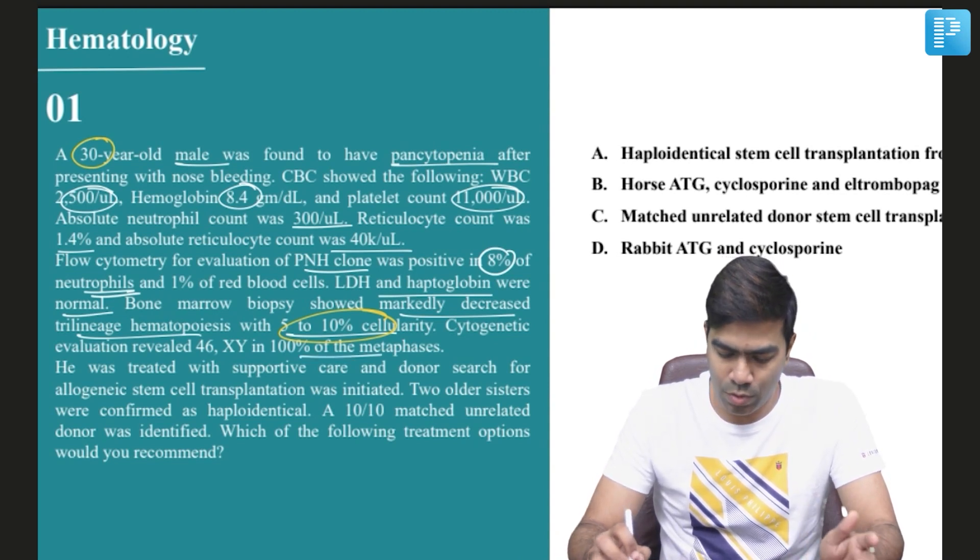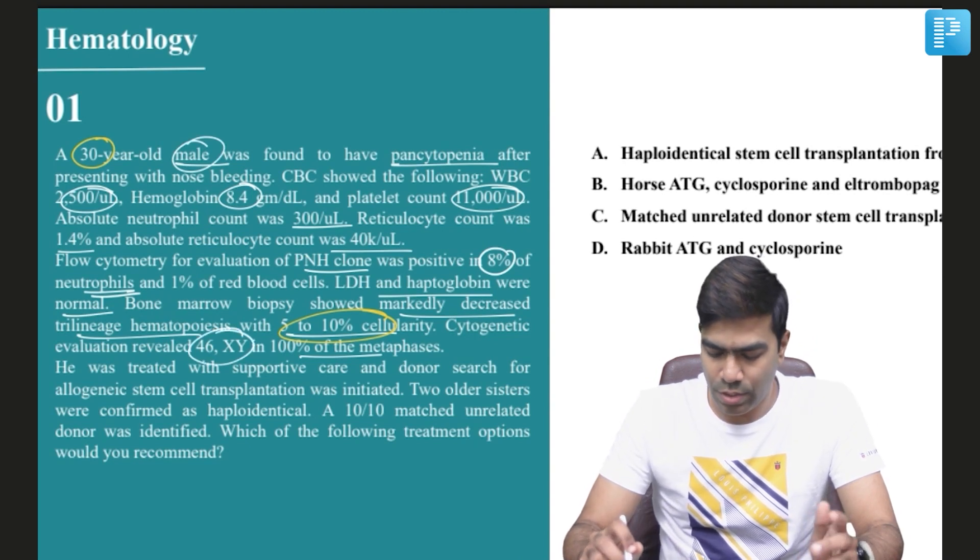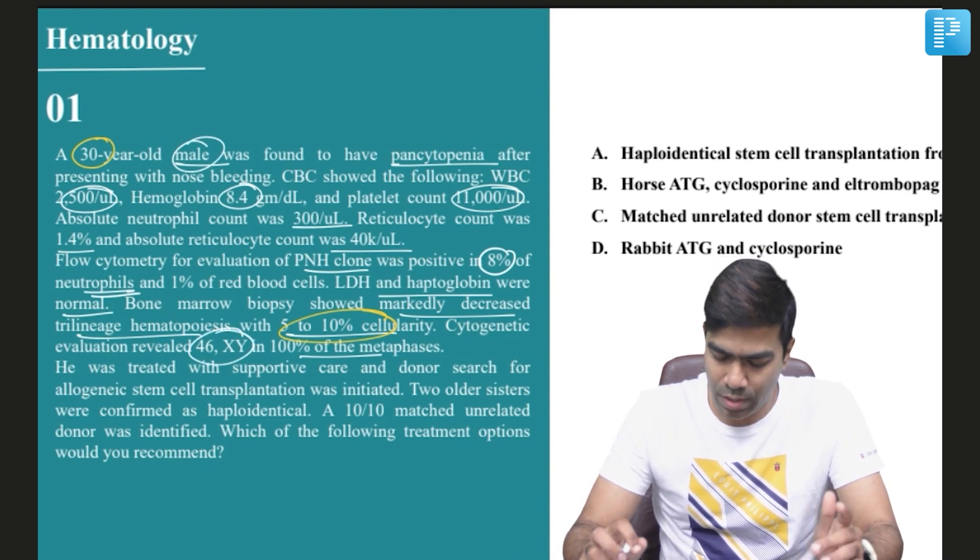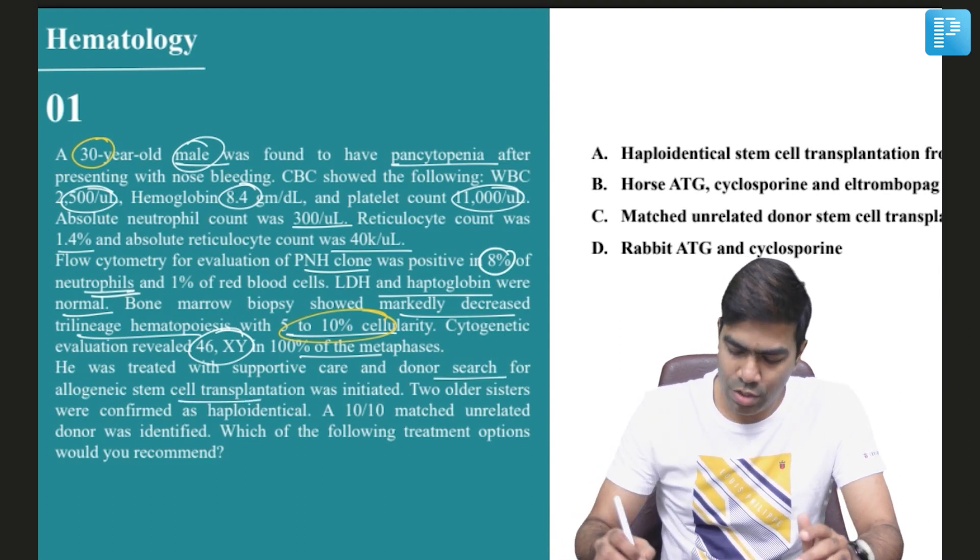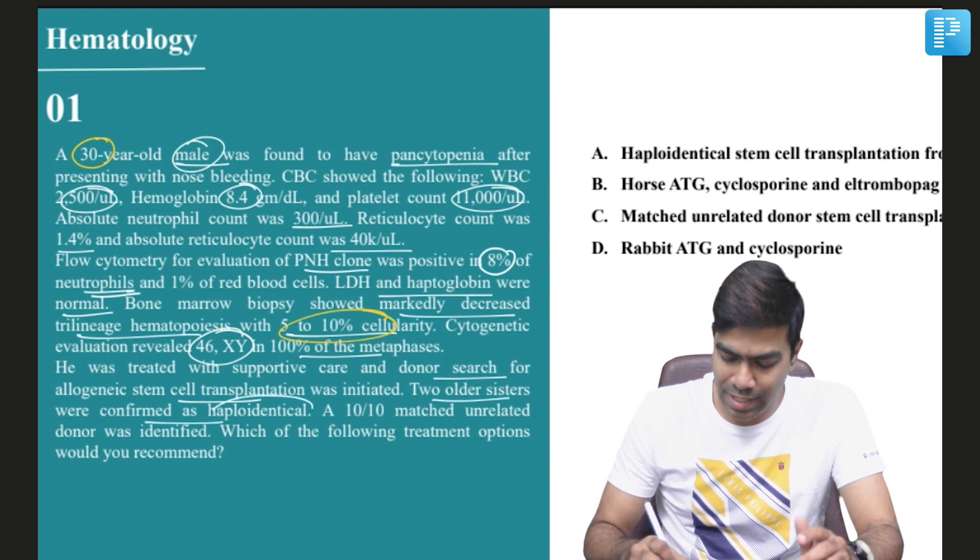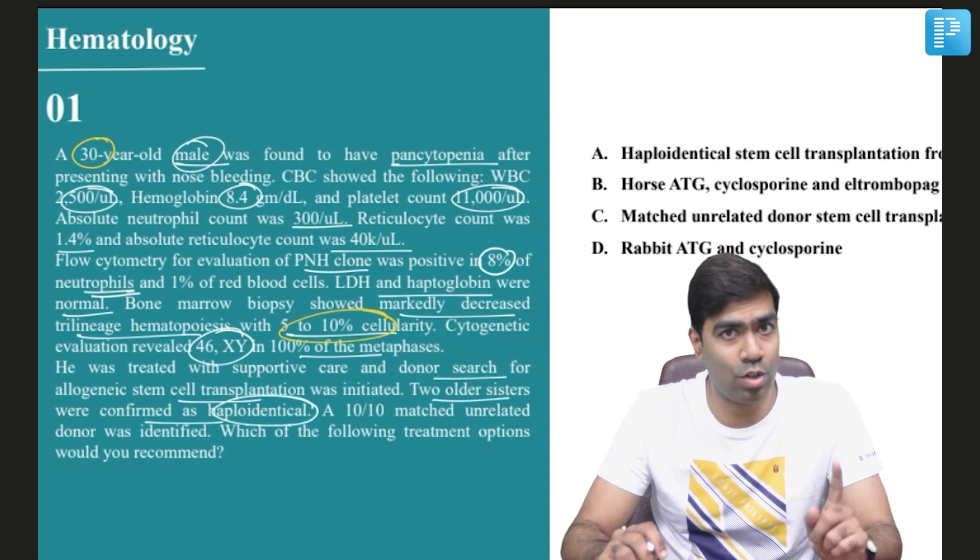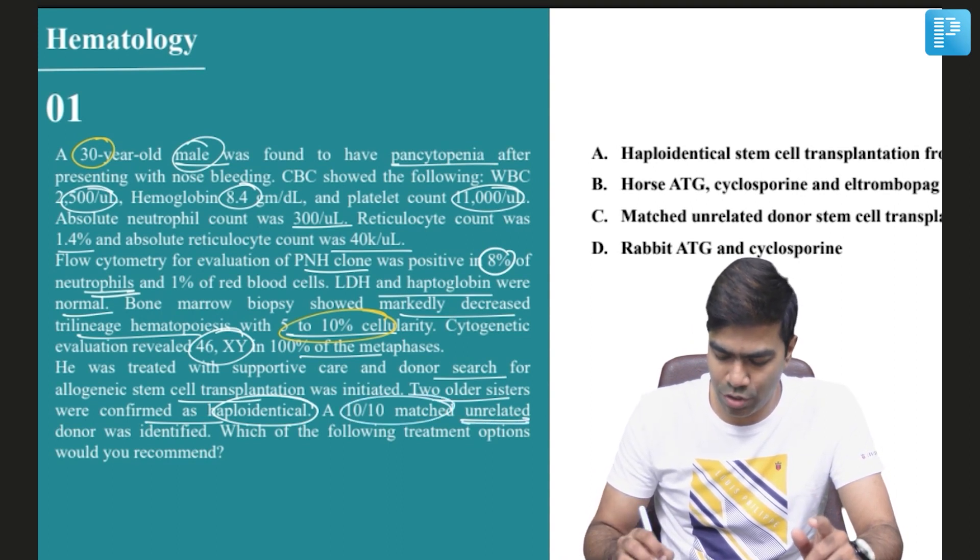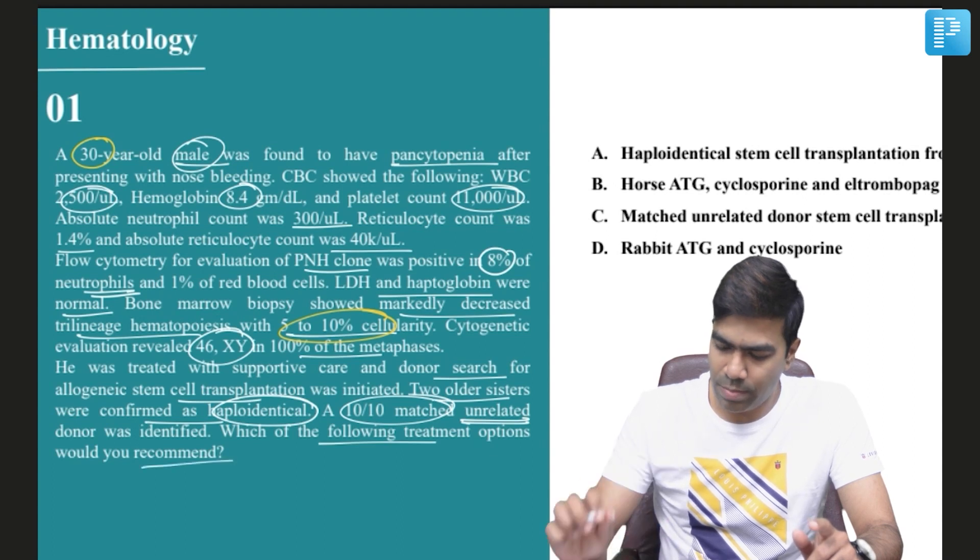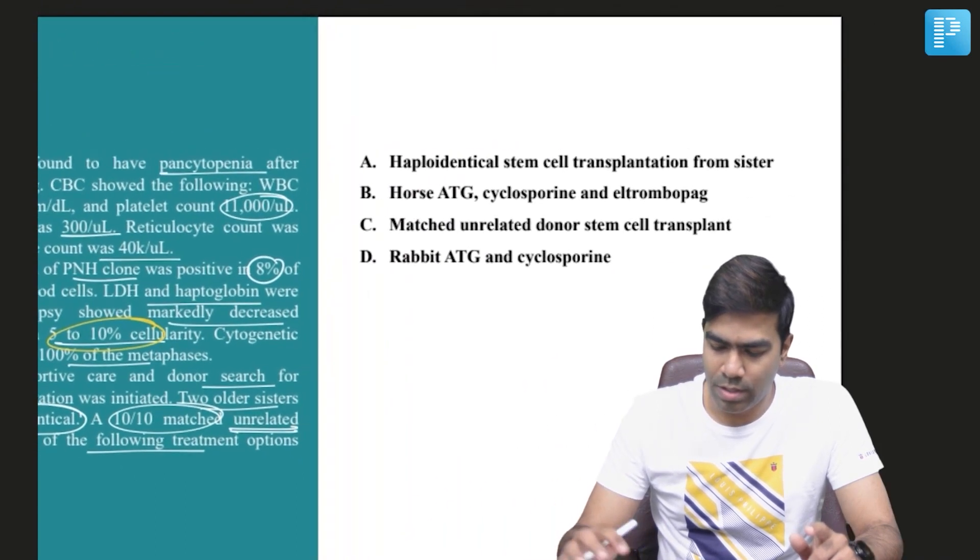the metaphase chromosomes. Of course he's a male so the cytogenetic evaluation should reveal 46 XY only. He was treated with supportive care and donor search for allogeneic stem cell transplantation was initiated. Two older sisters were confirmed as haploidentical, which means half match, not a full match. But there was also another donor who's an unrelated donor who's having a 10 by 10 match.